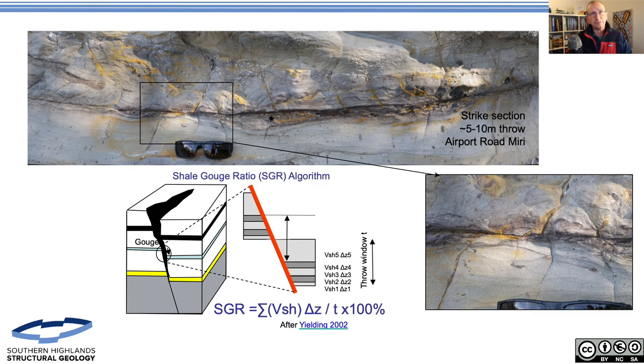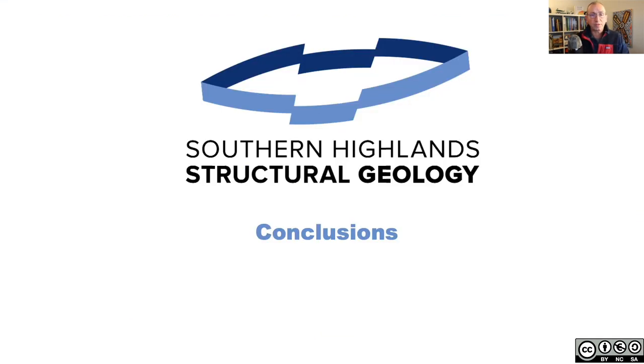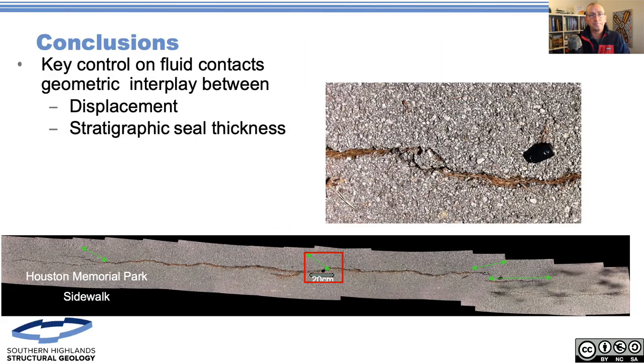So in conclusion, I think it's important to take on board that the key controls on fluid contacts are going to be the geometry and interplay between displacement and stratigraphic seal thickness - irrespective of whether you want to use gouge or not. Fundamentally the displacement and the stratigraphy are what drive all these fault seal calculations.